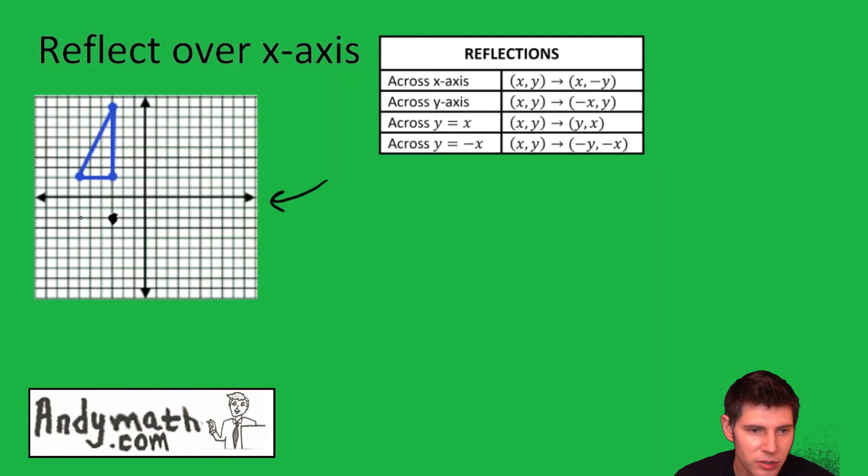1, 2, 1, 2. And then 1, 2, 3, 4, 5, 6, 7, 8, 9. 1, 2, 3, 4, 5, 6, 7, 8, 9. Then connect the dots.